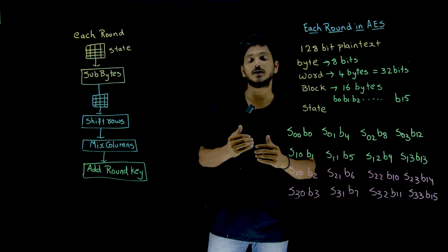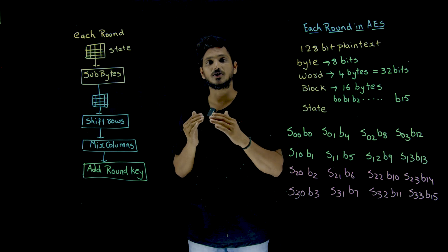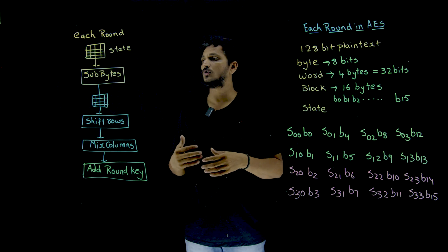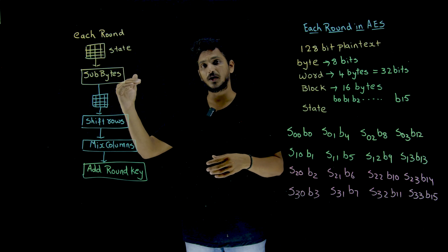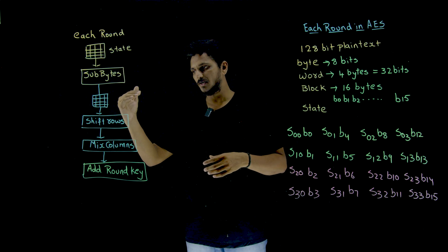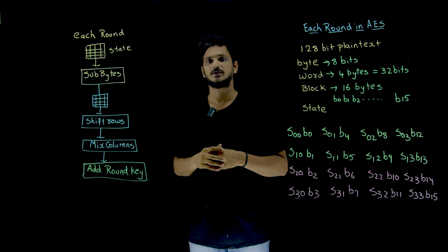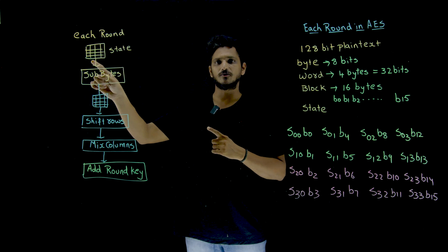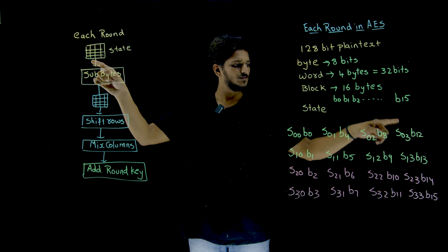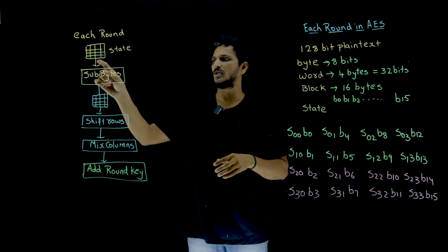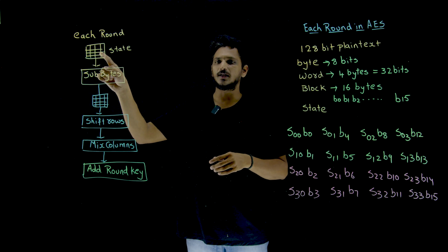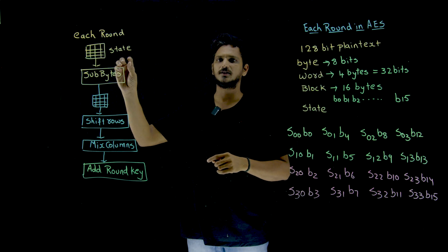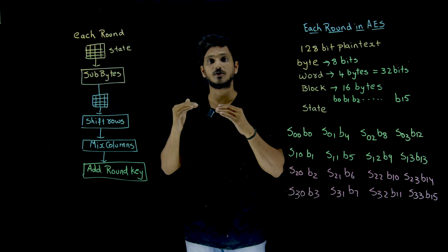Now let's try to understand what happens inside each round. This is an overview class — in our next classes we are going to discuss step by step each element in detail. Our input is taken in the form of a 4 by 4 two-dimensional array, which we call it as a state. Our 128-bit plain text is taken like this, and this state goes into your first round.